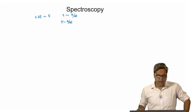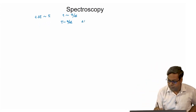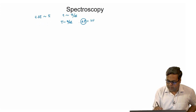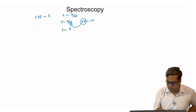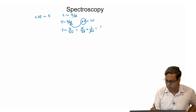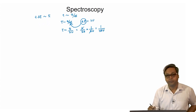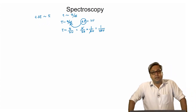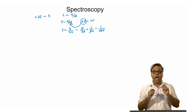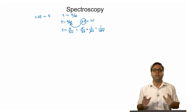From the Bohr condition, we get delta E equals h nu. If we put this delta E value into the expression for tau, we find tau is of the order of h-cross by h nu, that is h by 2 pi times 1 by h nu, which simplifies to 1 by 2 pi nu. This tells us that a transition from one stationary state of matter to another happens within the time taken for a complete oscillation of the light wave.